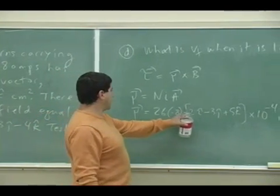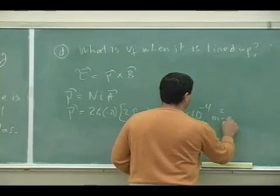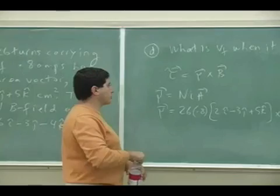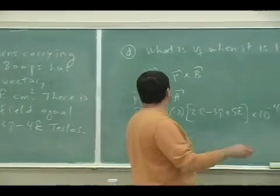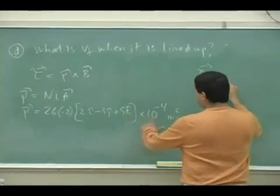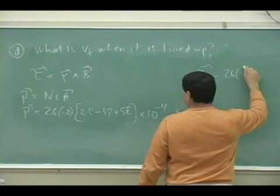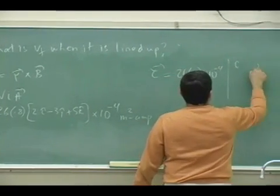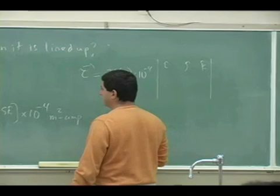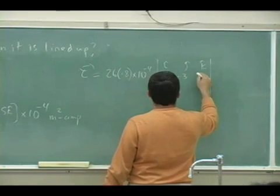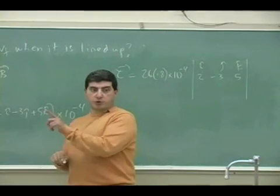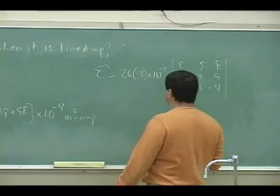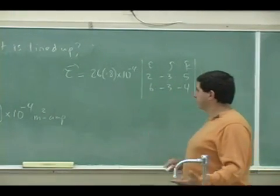And then since this is amps, so it's going to be a meter squared amp, which is the units of the mu. So then we take that and we cross product it with the magnetic field. So these things come out 26 times 0.8 times 10 to the minus 4, and then I do the cross product i, j, k, and then the 2, negative 3, 5, and then the components of the magnetic field, 6, negative 3, negative 4. So this is similar to what we did back then also.